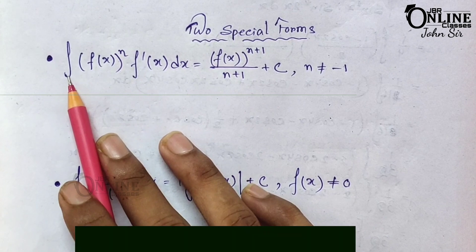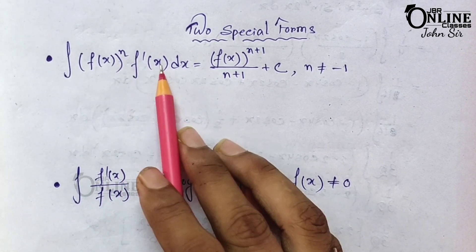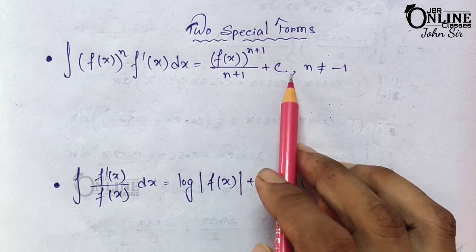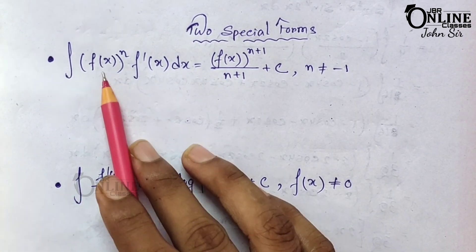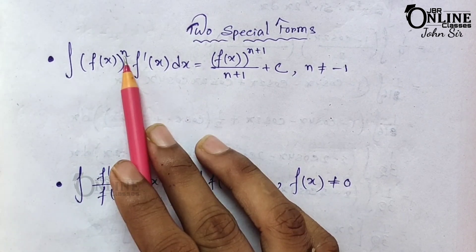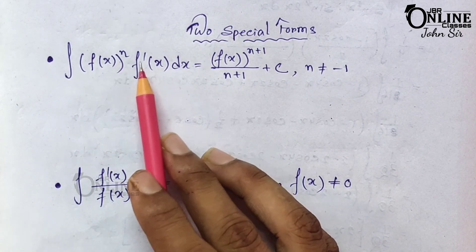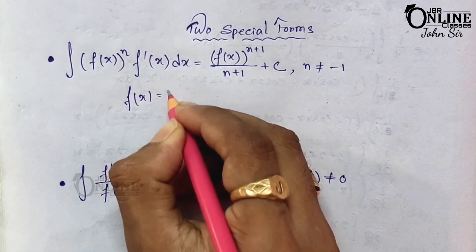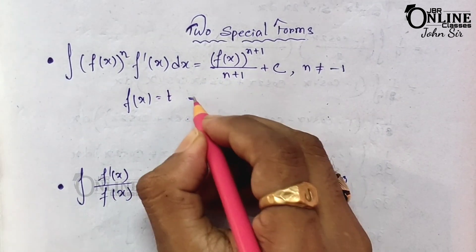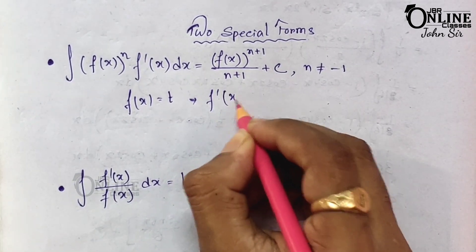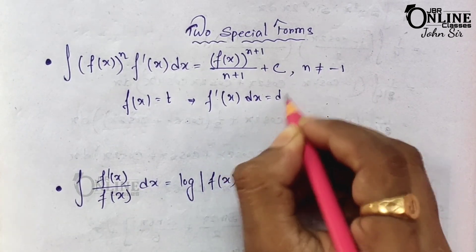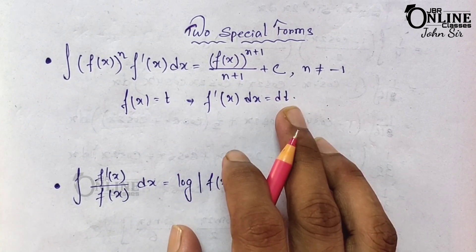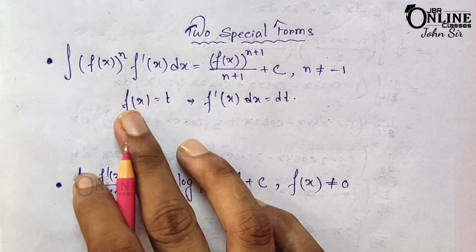The first formula is: integration of [f(x)]ⁿ · f'(x) dx equals [f(x)]^(n+1) / (n+1) + C. Here f(x) is a function raised to the power n, and f'(x) means the differentiation of that function. Suppose if f(x) = t, then f'(x)dx = dt.